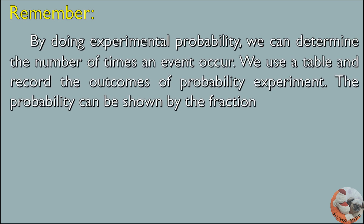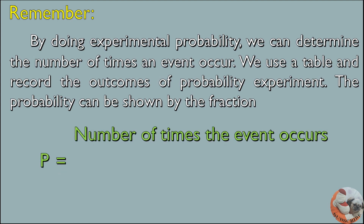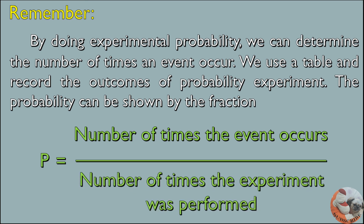Remember: By doing experimental probability, we can determine the number of times an event occurs. We use a table and record the outcomes of a probability experiment. The probability can be shown by the fraction: P is equal to the number of times the event occurs divided by the number of times the experiment was performed.